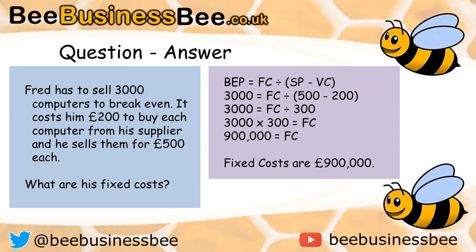Here is the answer you should have calculated. Write out the formula first: breakeven equals fixed cost divided by selling price minus variable cost in brackets. The breakeven point is 3,000, FC is unknown, selling price is £500, variable cost is £200. We can complete the brackets: 500 minus 200 equals £300. So we have 3,000 equals FC divided by £300. To get FC on its own, multiply both sides: 3,000 times £300 gives £900,000 in fixed costs. Well done if you got that right. If not, go back to the example in the video and try again.